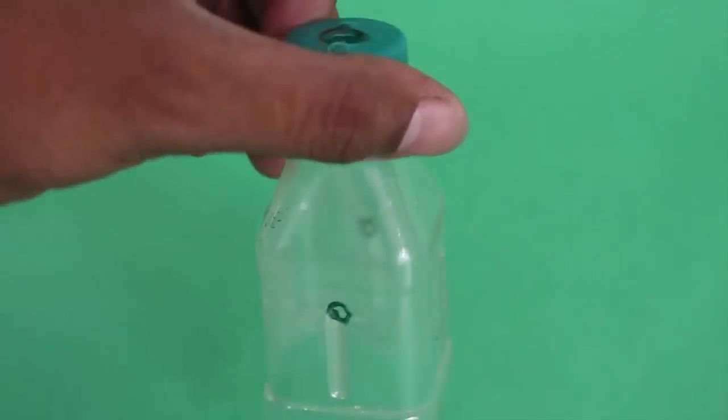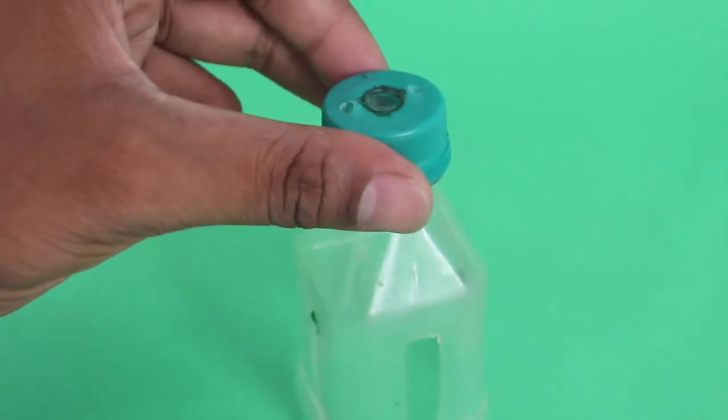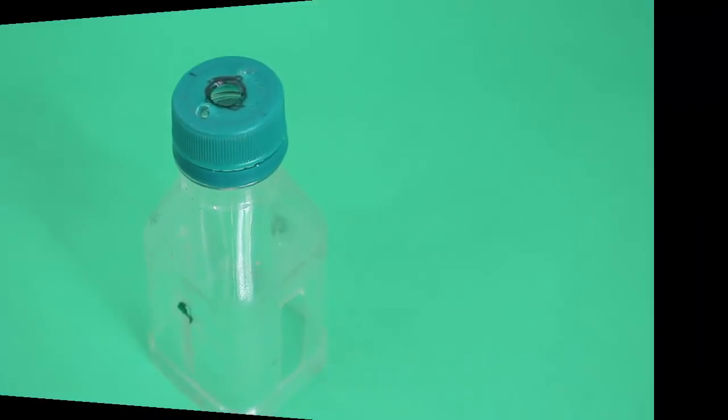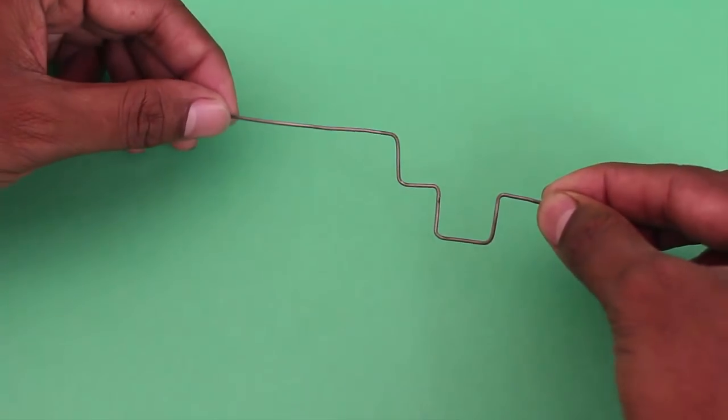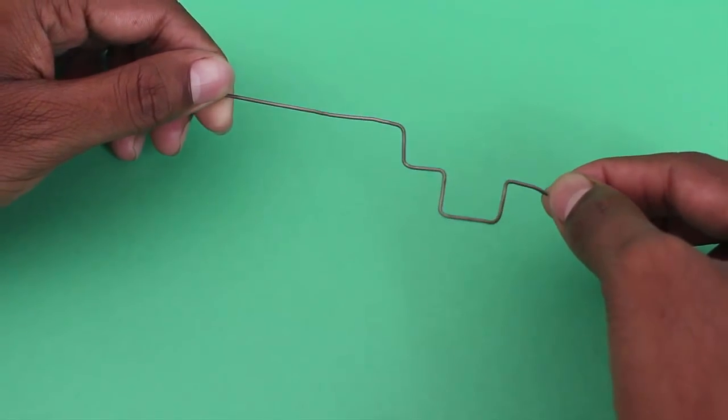First cut a 250ml bottle in half and make holes in the lid and the bottle as shown. Then bend a piece of wire to make a crank.